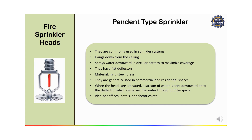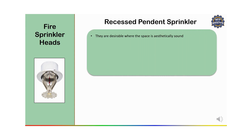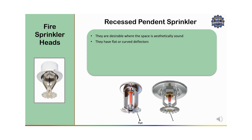Next we will see the recessed pendant sprinkler. It is similar to the pendant sprinkler but designed to be installed in a recessed housing, giving a more aesthetic appearance with a cover plate. They are desirable where the space is aesthetically important. They have a flat or curved deflector and are mounted in the ceiling recessed with a decorative cover plate.